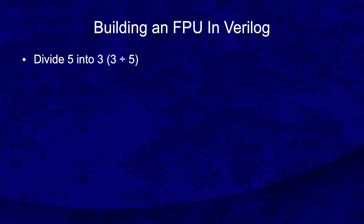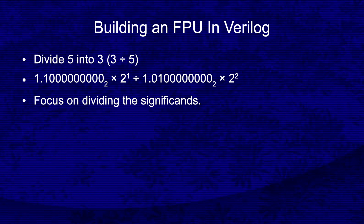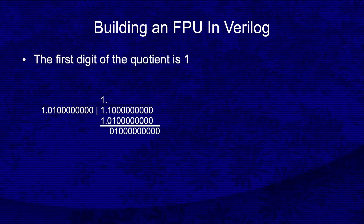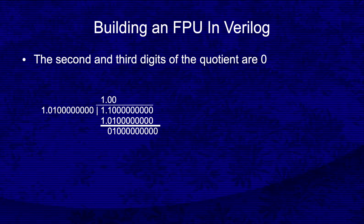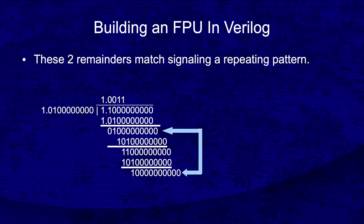Consider for a moment how we divide 5 into 3. This is how we write the operation as floating point numbers: 1.1 followed by 9 zeros, times 2 to the first power, divided by 1.01 followed by 8 zeros, times 2 to the second power. For now, I'm only going to focus on dividing the significands. Here's how we perform the long division of the divisor significand into the dividend significand. The first digit of the quotient is 1, the second and third digits are 0, the fourth and fifth digits are 1. At this point, we notice that we've repeated an earlier remainder value.